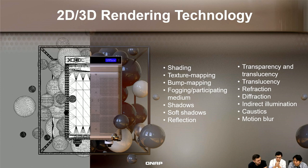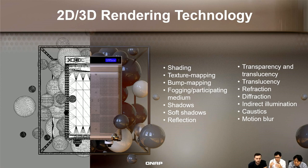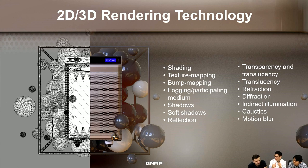At the beginning there are only wireframes. According to the 2D or 3D rendering technology, it comes from a lot of computing power. Those technologies include shading, texture mapping, refraction — a lot of stuff mixed together to generate pictures that look real. We have our PM Sam here — we're going to introduce how to leverage the TS-2888X as a render farm.